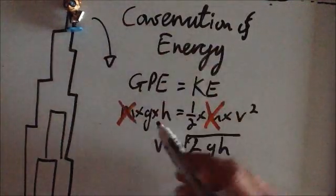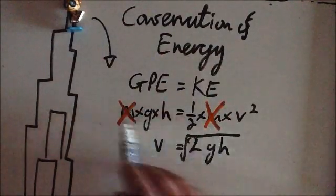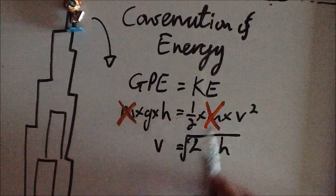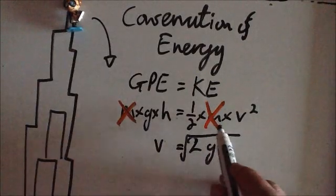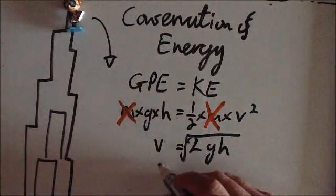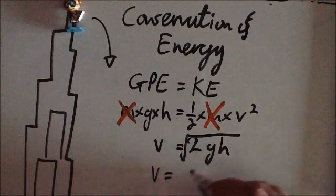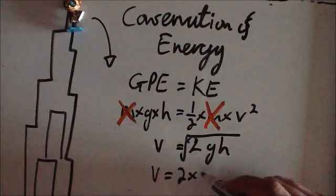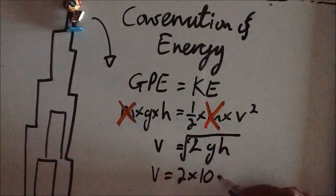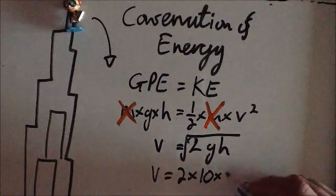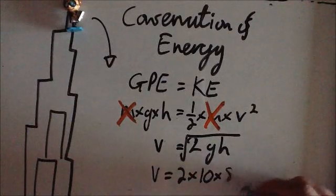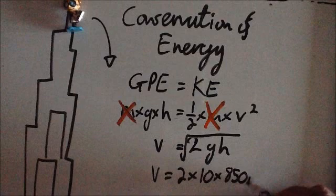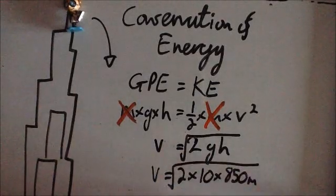Mass doesn't matter. All things fall at the same speed on Earth. Obviously, we're ignoring air resistance. So, V here is equal to 2 times the gravitational field strength of Earth, which is 10 GCSE. And the Burj Khalifa is roughly 850 metres tall. So, we're going to square all that.